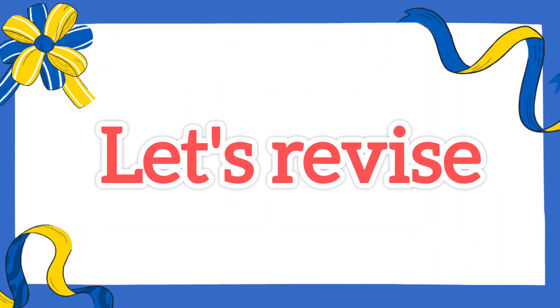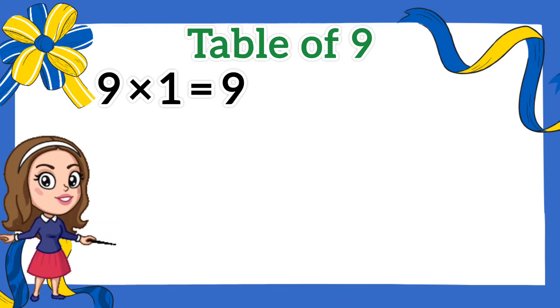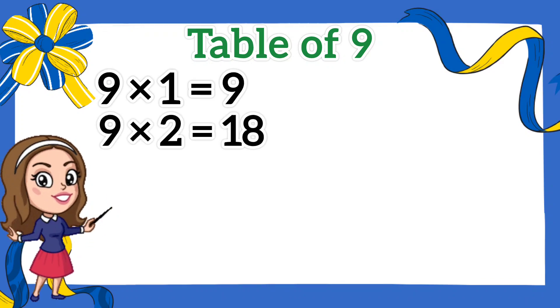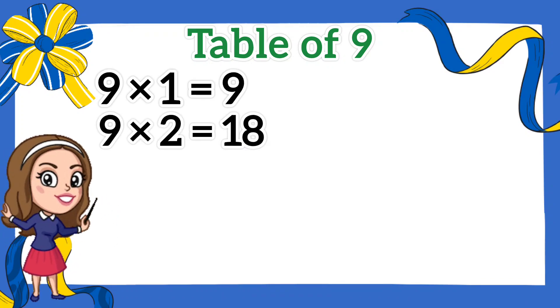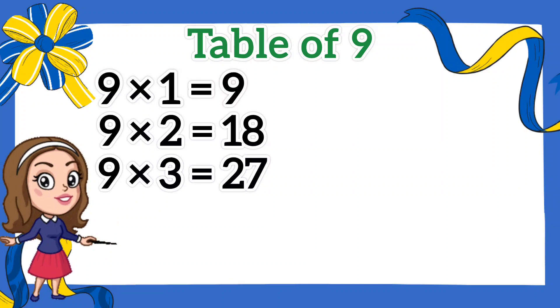Now, let's revise together. 9 1s are 9, 9 2s are 18, 9 3s are 27,